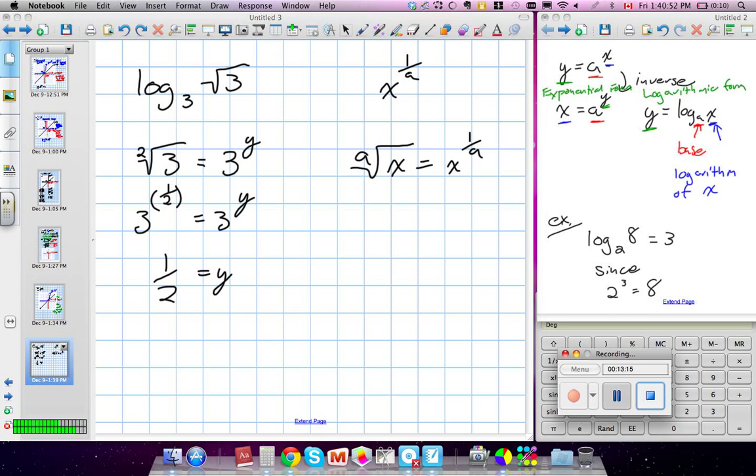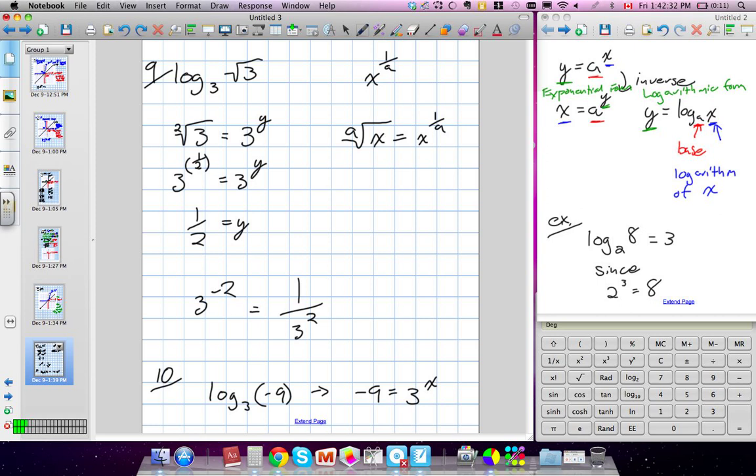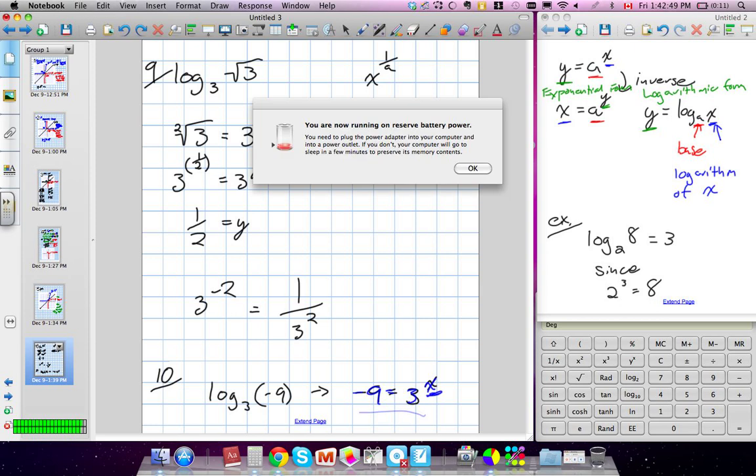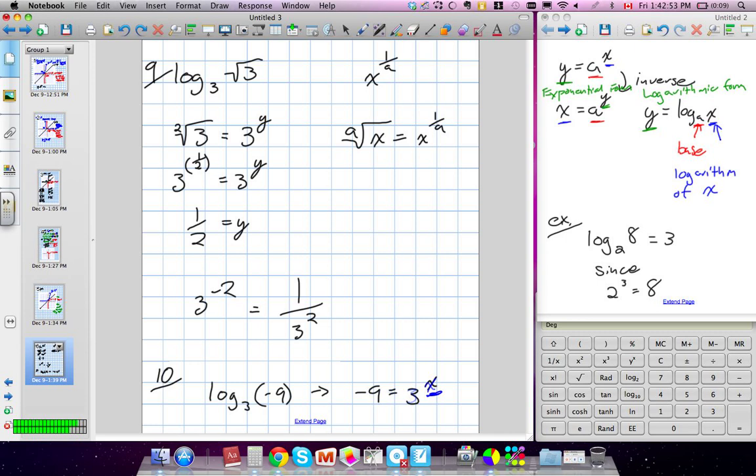So question 10, they asked us why log 3 can never be... This can never exist, this function here. And the reason being is we wrote it exponentially. We're essentially writing negative 9 is equal to 3 to the power of X. Well, that can't be because in this case, we can... We're multiplying a positive number by itself a certain amount of time. We can never keep multiplying by positives and get it and just move on.